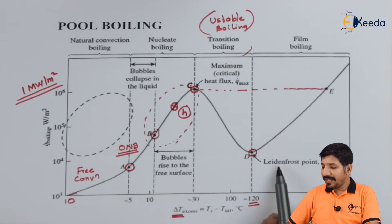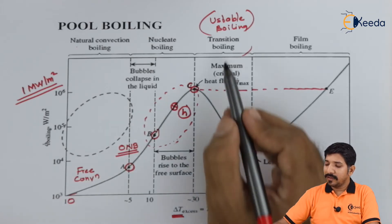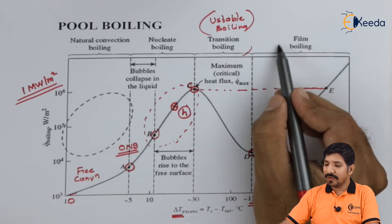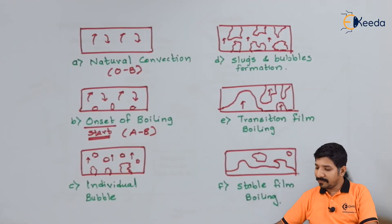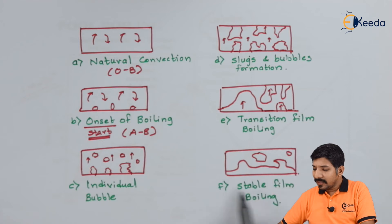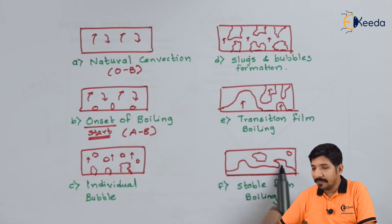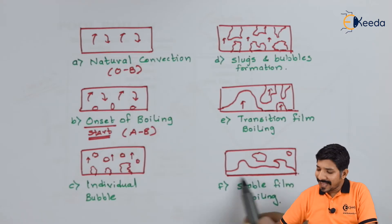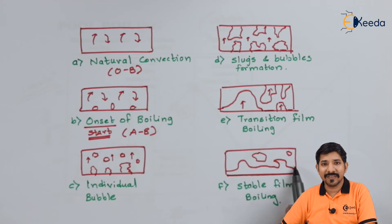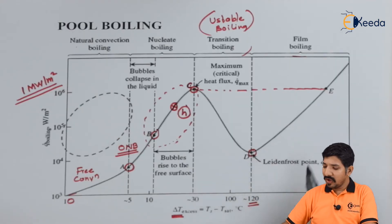Point D is what they call the Leidenfrost point — a very important point to understand. After the transition boiling, what comes next is film boiling. In film boiling, the entire surface is covered by a film, which is nothing but vapor. Once the entire surface is covered by vapor, that is the stable film boiling region.